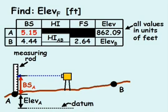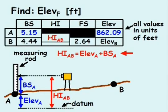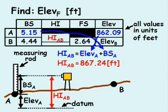As mentioned before, the height of the instrument AB is the vertical distance between the datum and the elevation of the line of sight. Now we can compute the height of instrument AB as the elevation at point A plus the backsight reading at point A, which equals 867.24 feet.